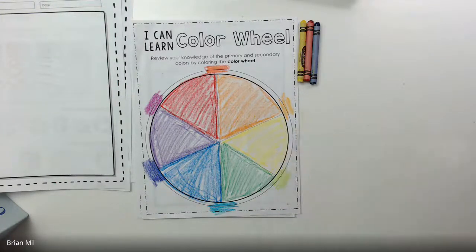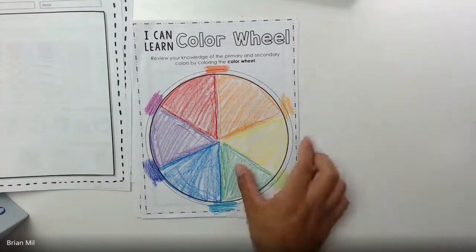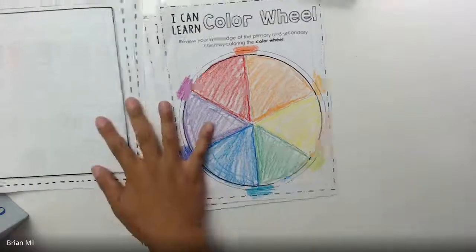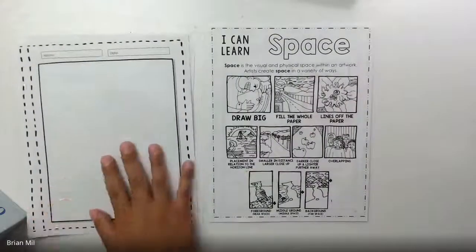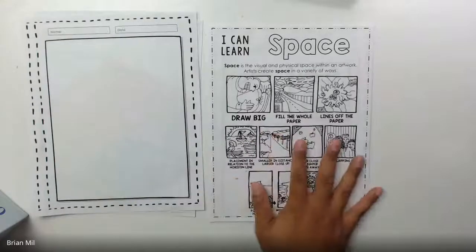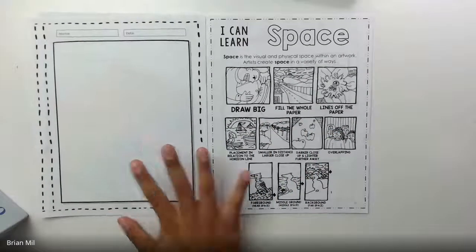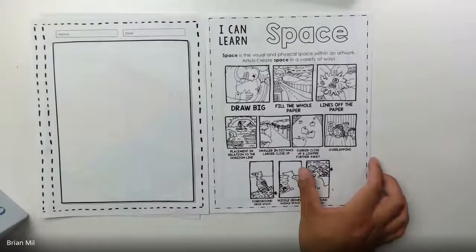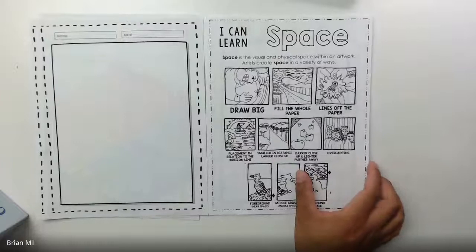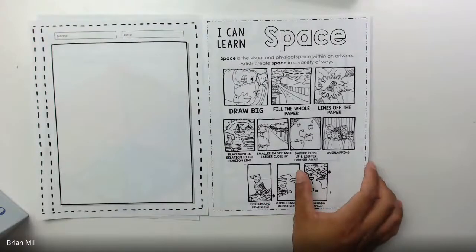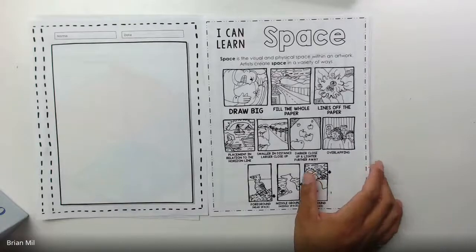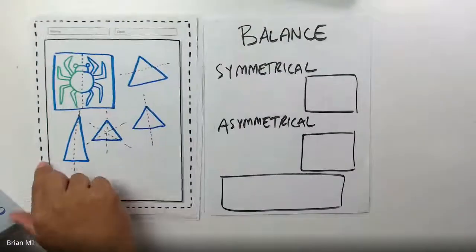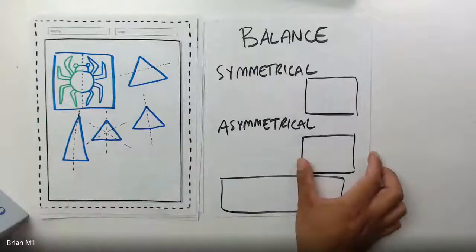Let me remove these crayons because we don't need them today. Let's go to the next page — we also talked about space. Space is basically the art of how you put things on a page. Really cool.